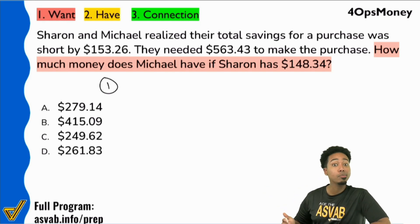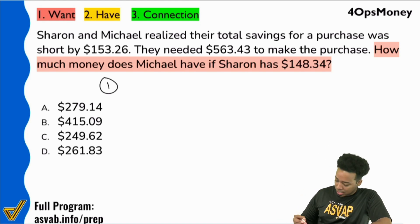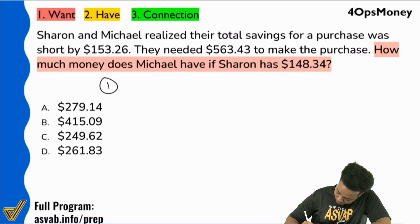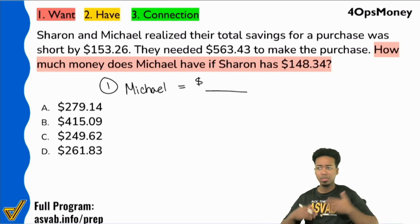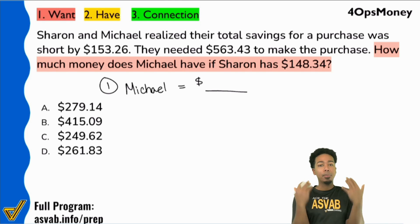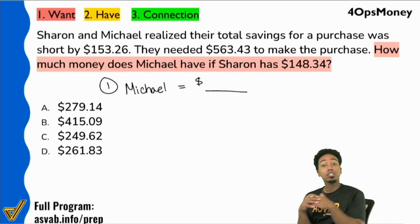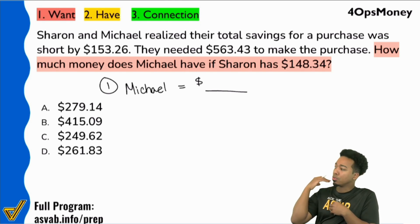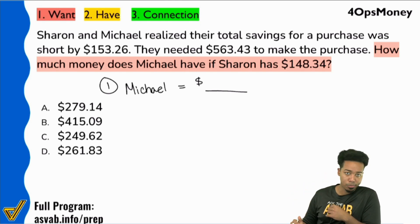What phrase are you writing down because you read the question? Right — Michael's money. How much money does Michael have? You want to shorten it, condense it. Say something like 'Michael equals blank dollars' or 'Mike has blank dollars.' Either way, that's fine. What you're implying is that you're looking for the amount of money that Michael has. Can you rephrase the question to show that you understand what you're looking for?